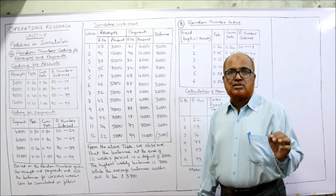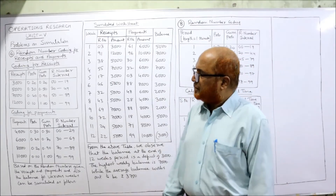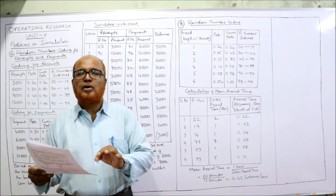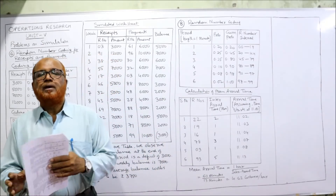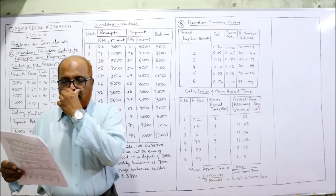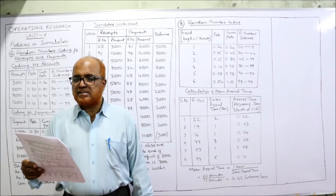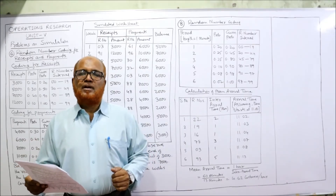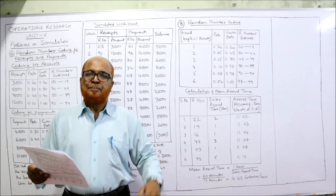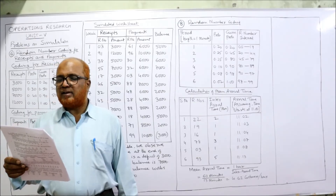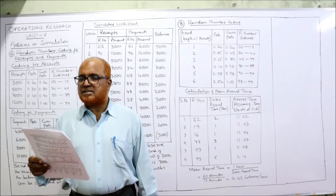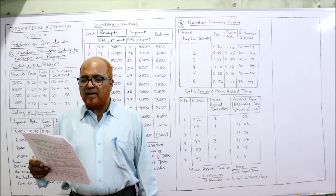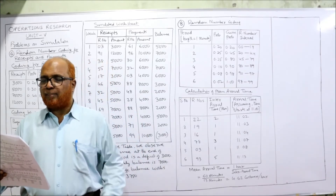The sixth problem is fully explained. The seventh problem is lengthy so it will be covered in the next video. Now, problem number eight: the inter-arrival time of customers follows a discrete distribution. Inter-arrival time means the time duration between one customer and the next. The probability distribution is given for inter-arrival times of 1, 2, 3, 4, 5, and 6 minutes with probabilities 0.20, 0.25, 0.35, 0.35, 0.10 respectively. Find the mean arrival time using the appropriate formula.